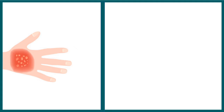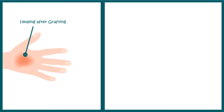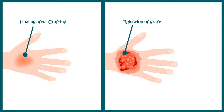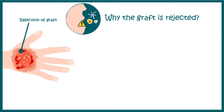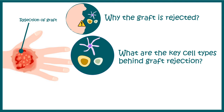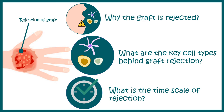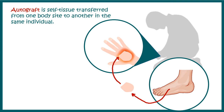There is a risk associated with this process: there could be rejection of the graft. Our goal is to learn why grafts could be rejected. A graft could be accepted by the recipient, leading to healing after grafting, or it could be rejected with necrosis in that region. We'll ask why the graft is rejected, what are the key cellular players that mediate the graft rejection process, and what is the time scale of graft rejection.